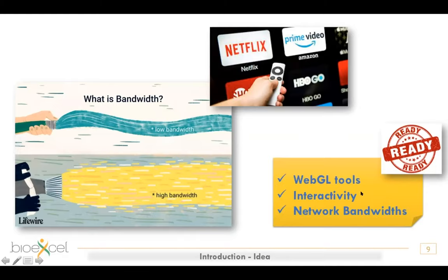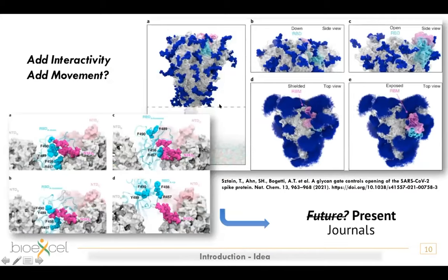Basically, we have everything we need to go from static figures to live figures: WebGL tools, interactivity, and network bandwidth. So can we add interactivity and movement to static figures and go from future journals to present journals? Let's try to do that now using HTML websites.